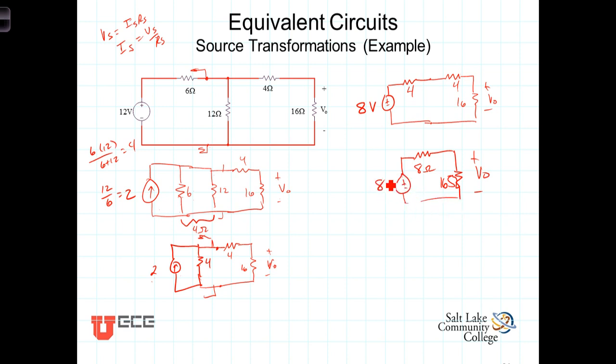And we can now determine V-out with a simple voltage divider. V-out, then, is equal to 8 times 16 divided by 8 plus 16, or 16 over 24, that's 2 thirds of 8, which is 16 thirds or 5 and 1 third volts.